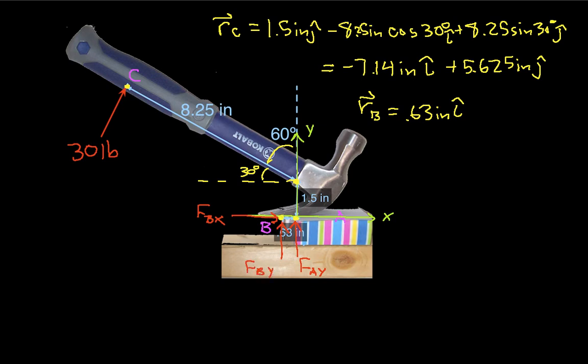And then we'll have a force FBX and FBY. And we'll take the sum of the moments about B. Just like we did in the previous example, the only thing that's changed is the numbers here. So to do that, we need to have the relative vector RBC, which again is RC minus RB. And when you work that out, you get minus 6.41 inches i-hat plus 5.625 inches j-hat.